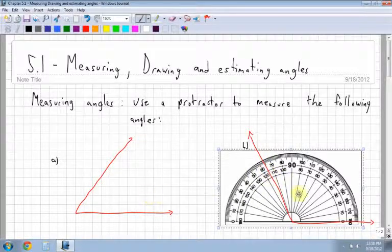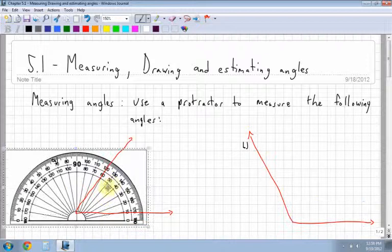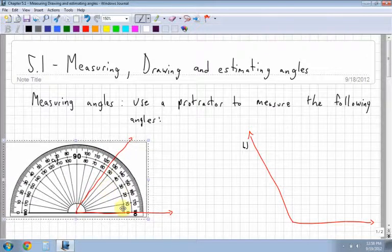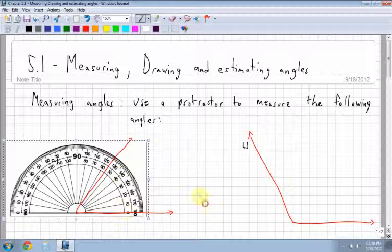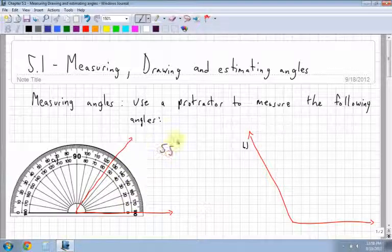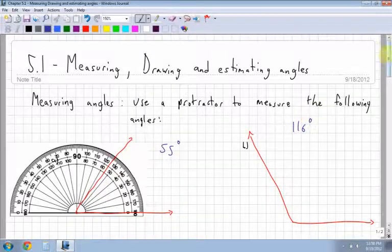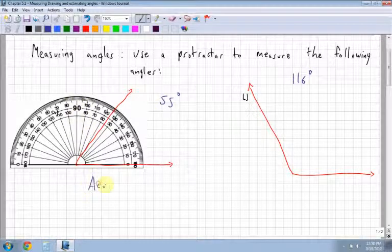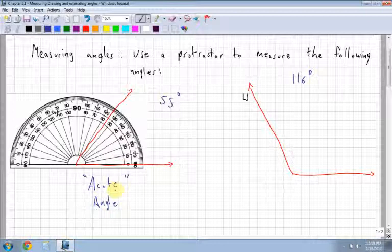So my first angle was about 55 if I remember correctly. 55 and this one was 116 degrees. Just make note of how you measure with a protractor. Now remember that 55 degrees is smaller than 90, so therefore this is an acute angle. Acute means smaller than 90 degrees.